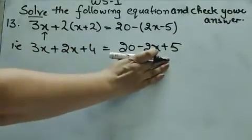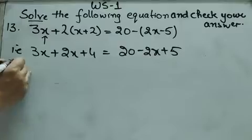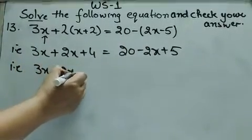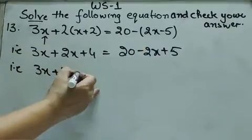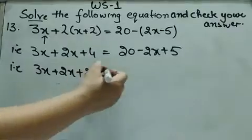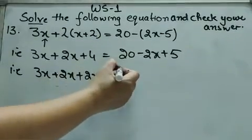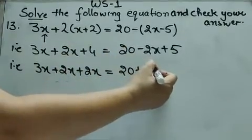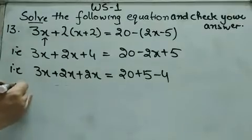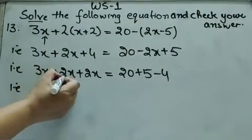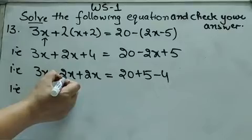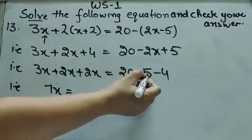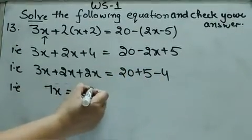Equal to sign की दोनों तरफ ही x वाली terms हैं। x वाली terms एक तरफ ले आएंगे: 3x plus 2x. जो minus 2x है, transposing के बाद यहाँ plus 2x हो जाएगा। Constant terms एक तरफ: 20 plus 5, और 4 जो constant plus का है, वो दूसरी तरफ minus का होगा। That is 3x plus 2x gives 5x; 5 plus 2 gives 7 — so 7x equal to 20 plus 5 gives 25, minus 4, that is 21.